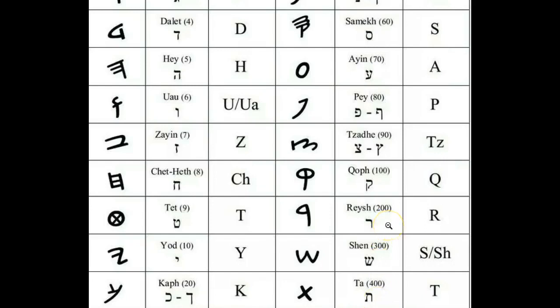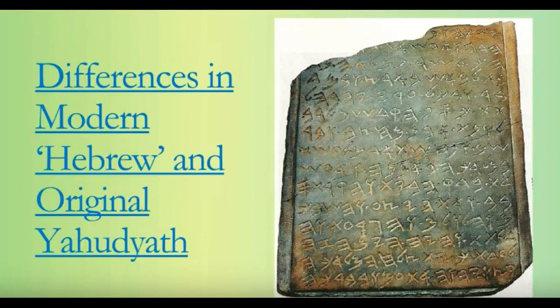Here you have your 22 letters that comprise your Hebrew Yahudiith alphabet. Now we'll be talking about some of the differences between modern Hebrew and original Yahudiith. I'll be sure to link a video from Sister Ayanna in the description box below, who does a great job breaking down the Hebrew alphabet and the differences between Hebrew and the original Yahudiith.